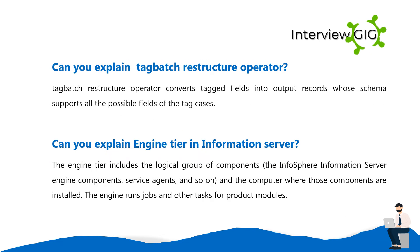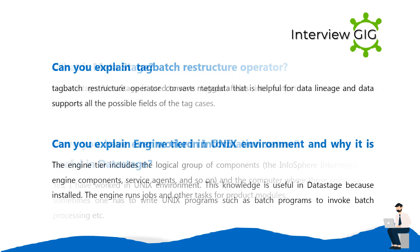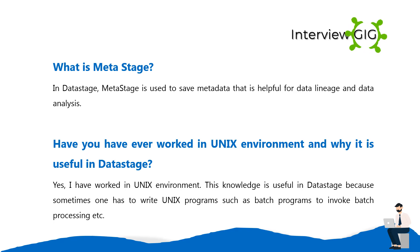Can you explain Tag Battery Structure Operator? The Tag Battery Structure Operator converts tagged fields into output records whose schema supports all the possible fields of the tag cases. Can you explain Engine Tier and Information Server? The Engine Tier includes the logical group of components — the InfoSphere Information Server engine components, service agents, and so on — and the computer where those components are installed. The engine runs jobs and other tasks for product modules.